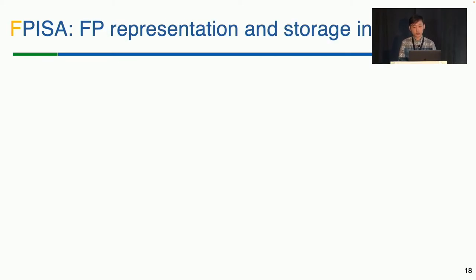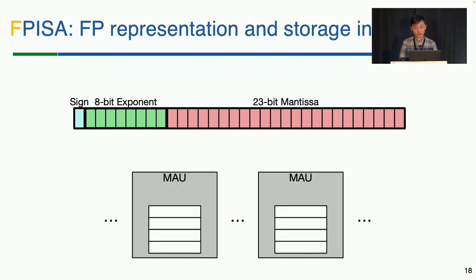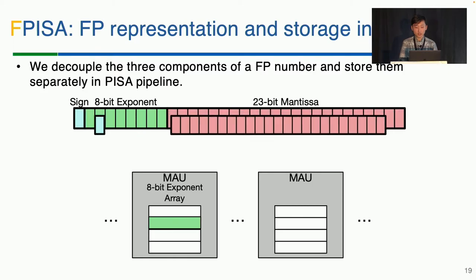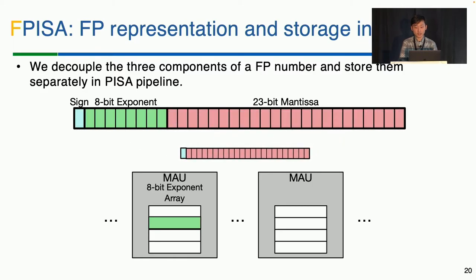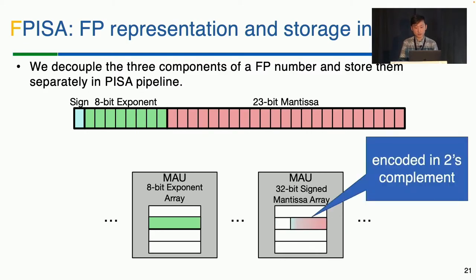Let me first introduce floating-point representation in PISA. Given a floating-point number, how can we store it in the PISA pipeline stages? The idea is decoupling: we put the 8-bit exponent in the pipeline stage memory, and at the same time, we combine the sign bit and mantissa and place them in a subsequent pipeline stage. Note that this is encoded in two's complement for convenient add or subtract operation support.